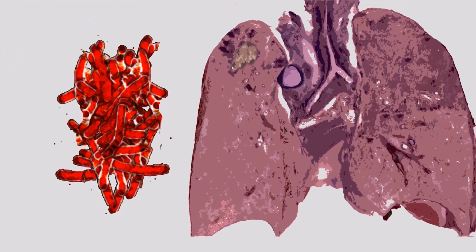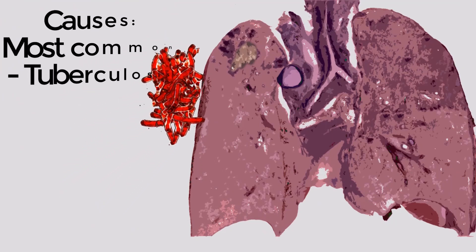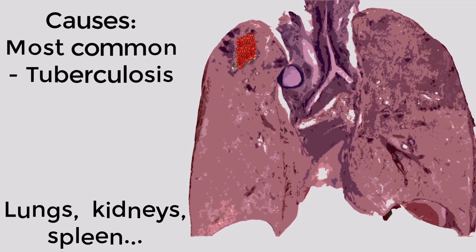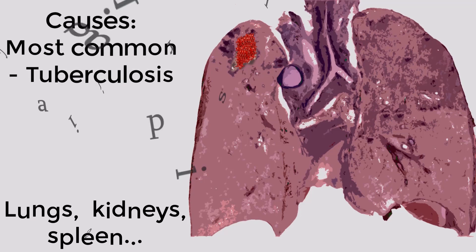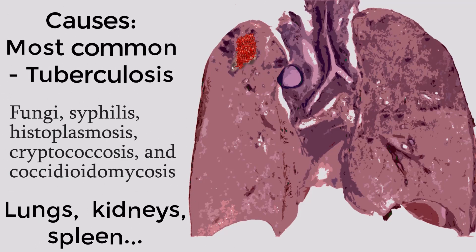In most cases, caseous necrosis is caused by tuberculosis and affects the lungs, but sometimes other organs too. Rarely, caseous necrosis is caused by fungi, Aspergillus, and other parasites.